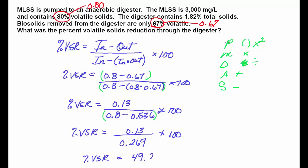So 0.13 divided by 0.264 and then times 100 gives us a percent volatile solids reduction of 49.2%. And it seems weird that you start with 80% volatile and you get rid of half of it and you end up with 67% volatile. But that's what happens.